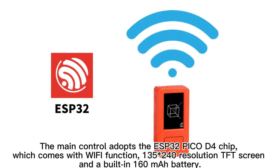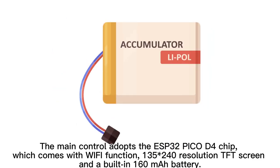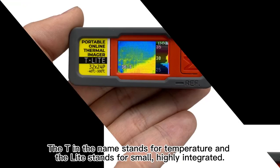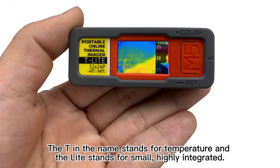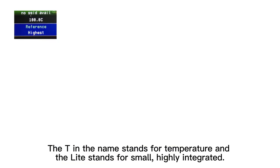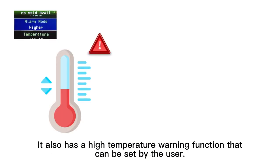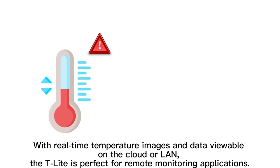The main control adopts the ESP32-PICO-D4 chip, which comes with Wi-Fi function, a 135x240 resolution TFT screen, and a built-in 160 mAh battery. The T in the name stands for temperature, and the Lite stands for small, highly integrated. It also has a high-temperature warning function that can be set by the user.